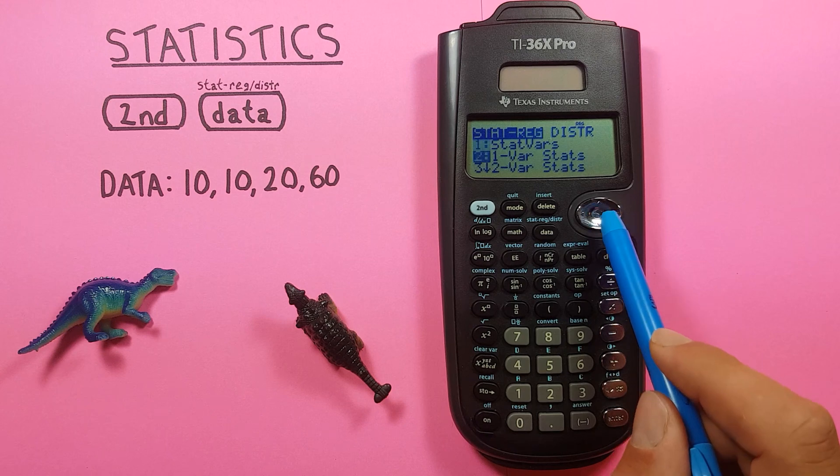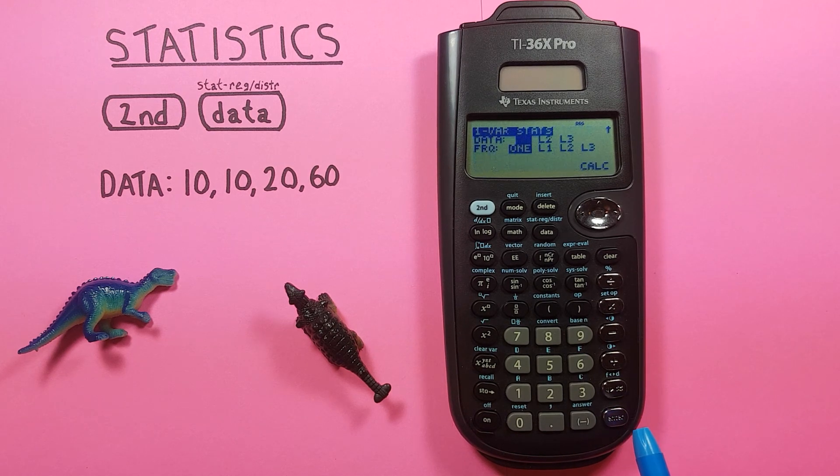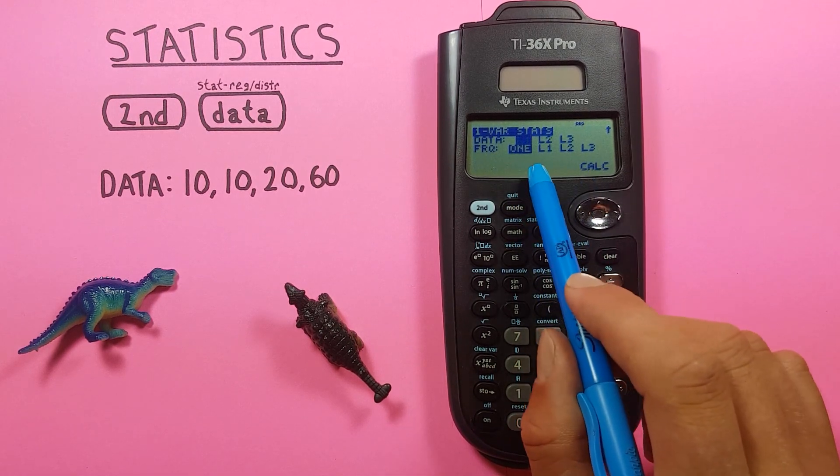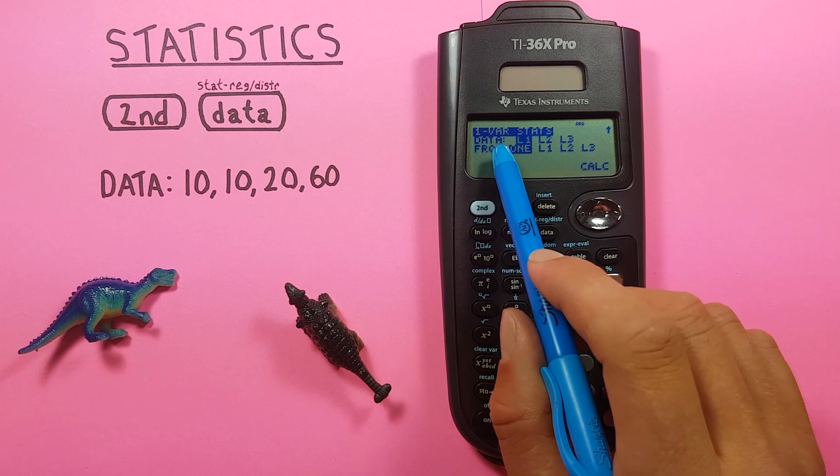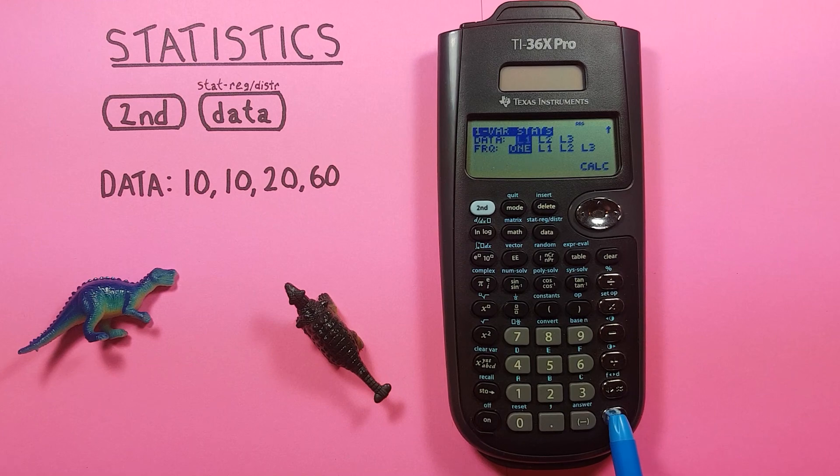Since we're doing basic statistics we scroll down to the one var stats or one variable statistics and press enter. We now get to this screen which asks us first where do we want to take our data from. We want to use list one so we press enter on L1.